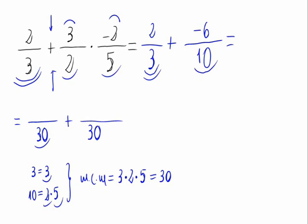Now, 30 divided by 3, 10 times 2, 20. 30 divided by 10, 3 times minus 6, minus 18. The denominator stays the same and the numerator is 20 plus minus 18, that's 2.